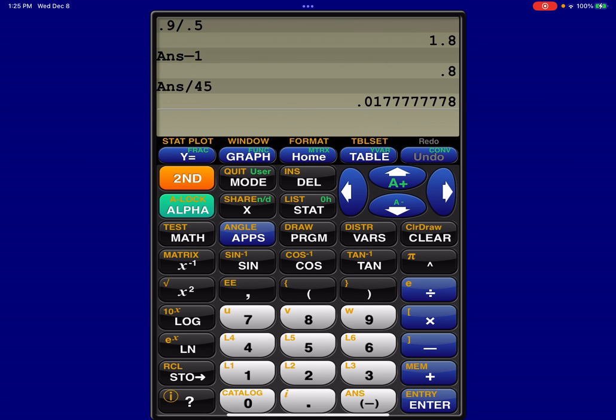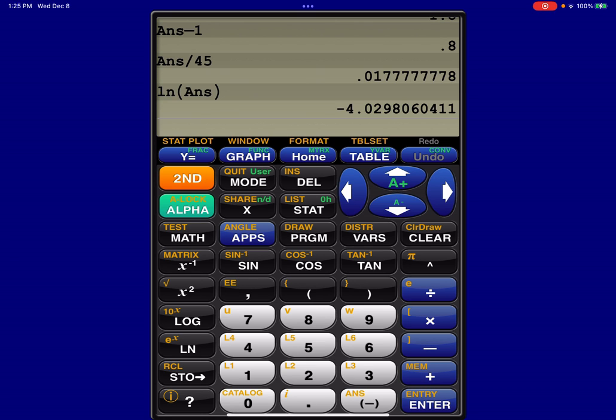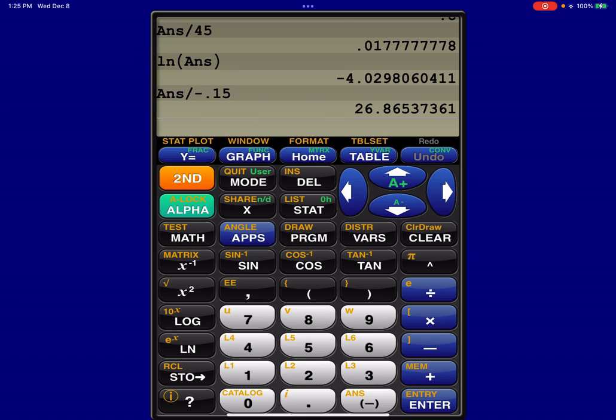All right. And there's my decimal showing up. So I'm going to take the natural log of that answer. Let me close that parentheses. All right. Great. And then the last thing I need to do, if I remember, was divide by negative 0.15. And when I hit enter, I'm going to get about 26.87.